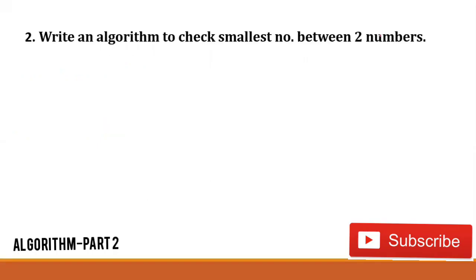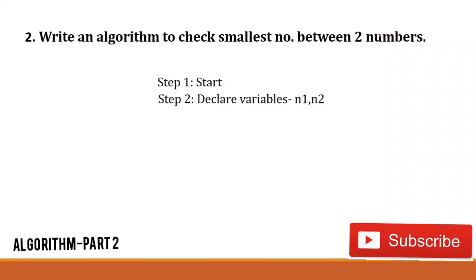Now we'll write the algorithm to check the smallest number between two numbers. The first step is start. In step two we declare the variables — two variables are required because we are comparing two numbers. I declared two variables n1 and n2: in n1 I'll store the first value, and in n2 I'll store the second value. In step three we enter the values we want to compare, so the next step is: Read n1 and n2. In this step I'll enter two values, so I wrote 'read n1 and n2'.